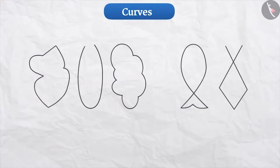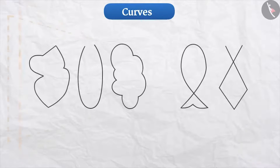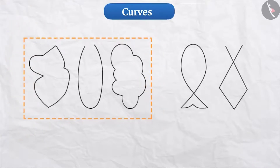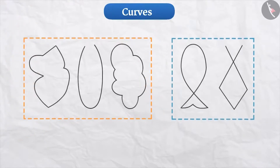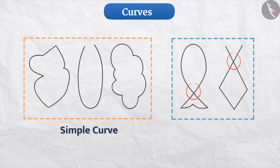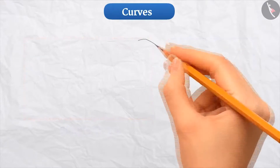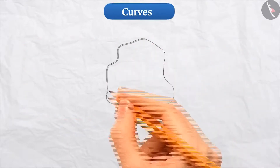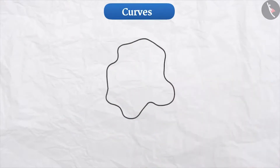Now look at these curves. What is the difference between these curves? These curves do not have a line that cuts themselves, whereas these curves cut themselves. When a curve does not cut itself, we call it a simple curve. If a curve cuts over itself, then it is a non-simple curve.